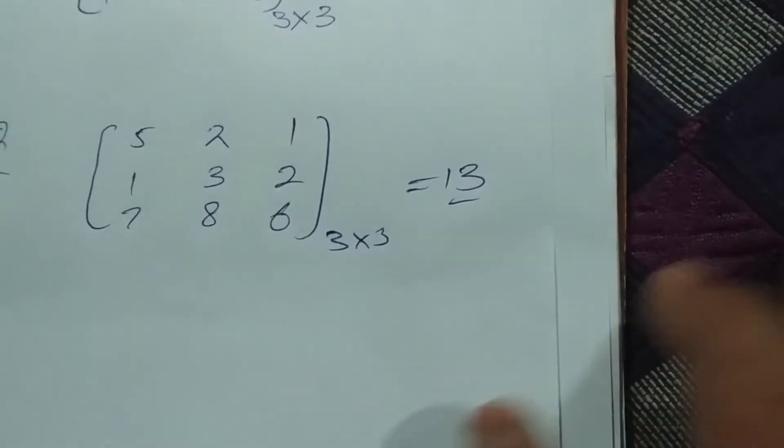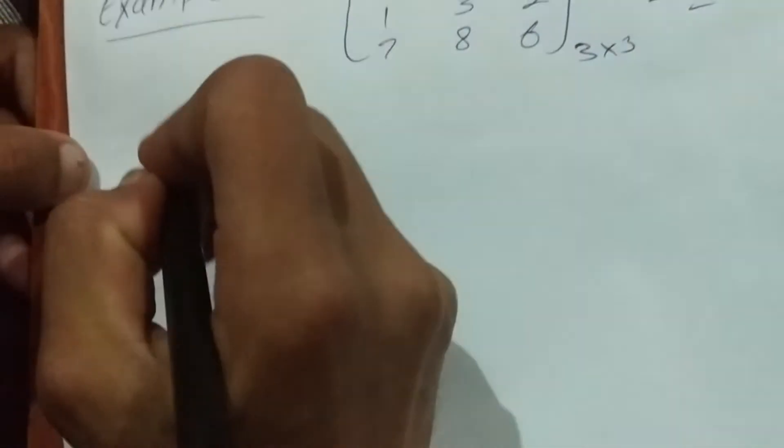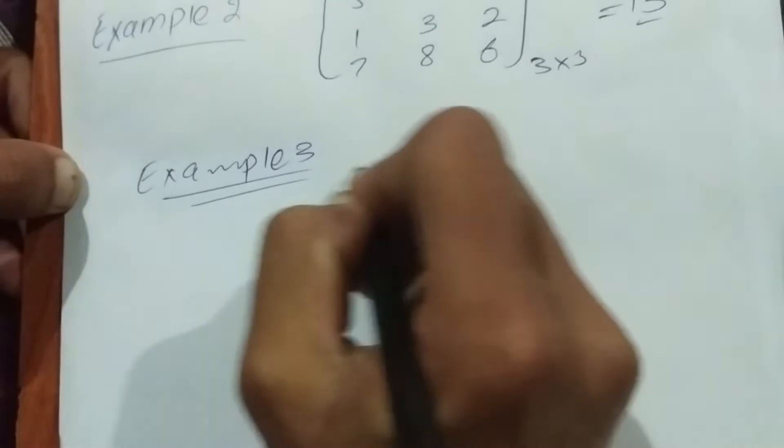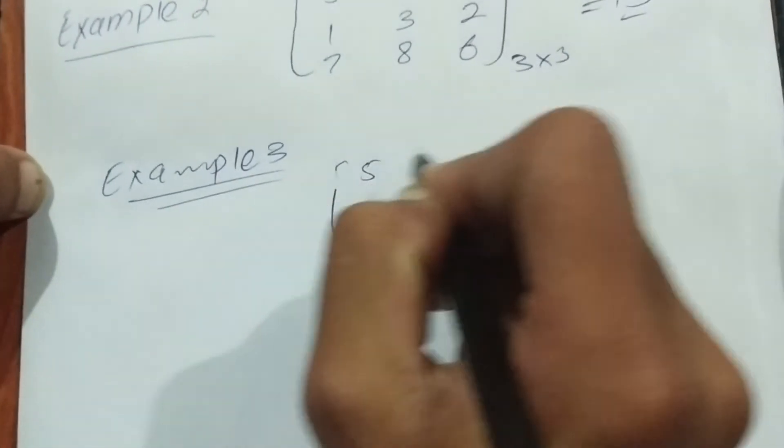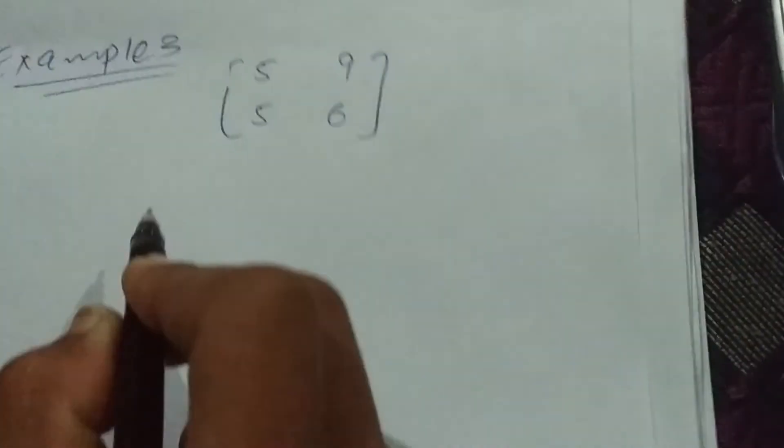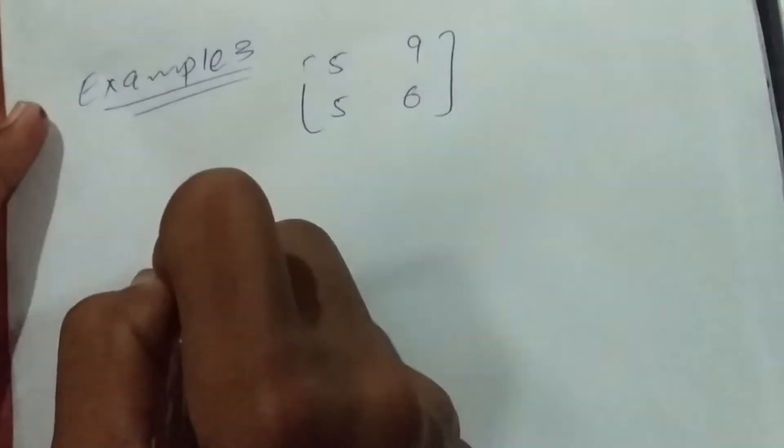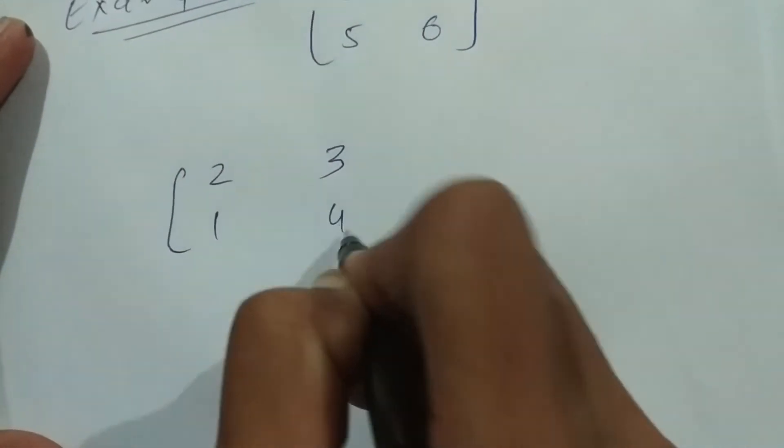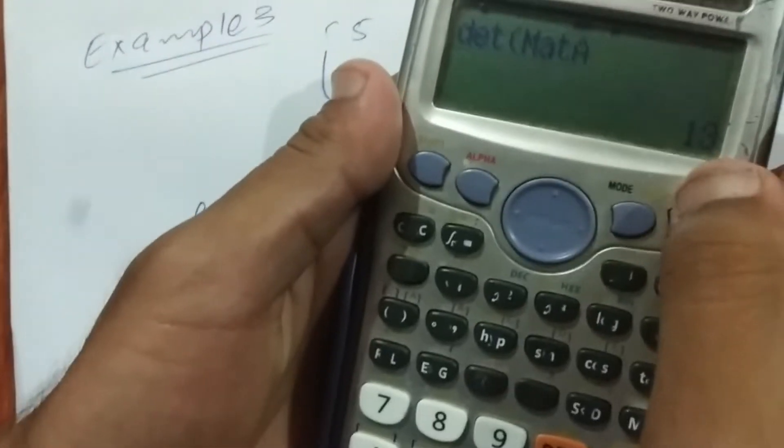Now we are going to see another example, 2 by 2 matrix. 5, 9, 5, 6. Also we have to solve this: 2, 3, 1, 4. First we are going to solve this question quickly on the calculator.